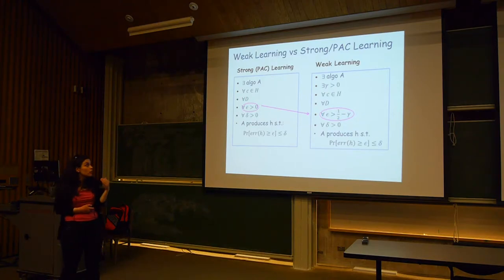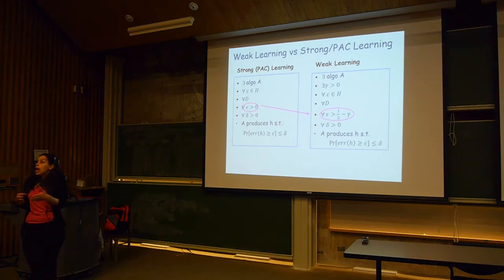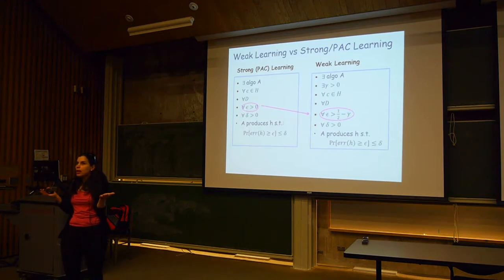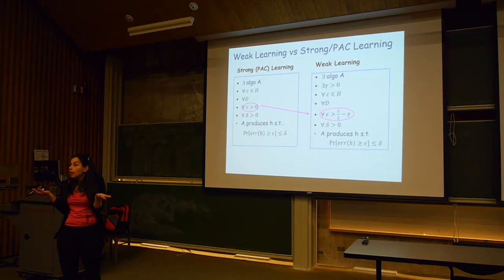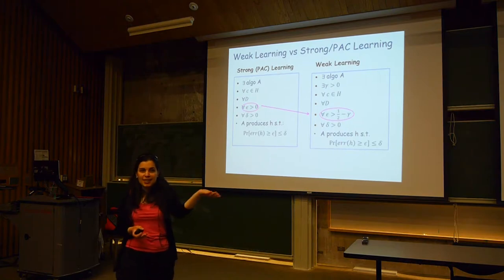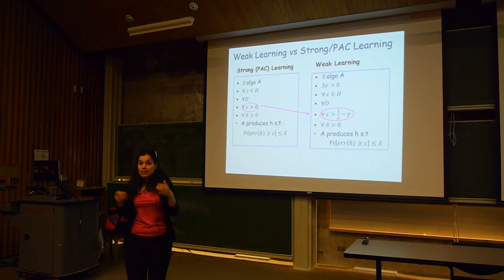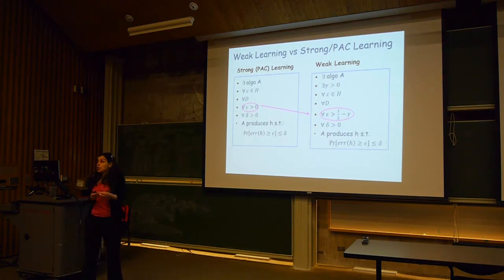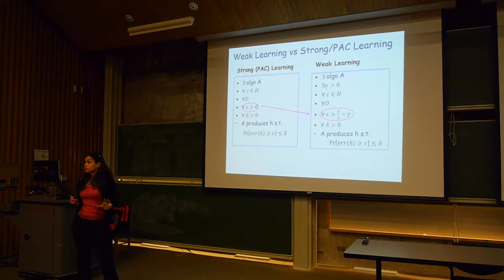Now, what Kearns and Valiant introduced is a notion of weak learning. Rather than requiring the algorithm to output arbitrarily accurate hypotheses, all we want is that the algorithm does better than random guessing by a constant gap gamma. For a binary classification problem, random guessing achieves error one-half trivially — just flip a coin. Weak learning means you need to take a polynomial-size sample and output a hypothesis that does better than random guessing by constant gap gamma. That's weak learning.